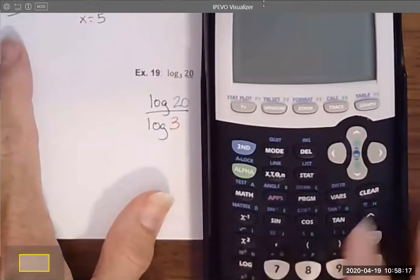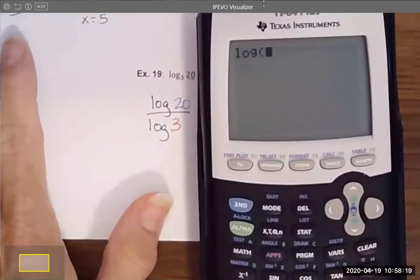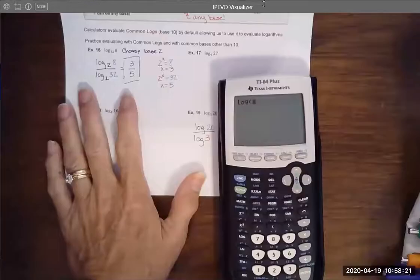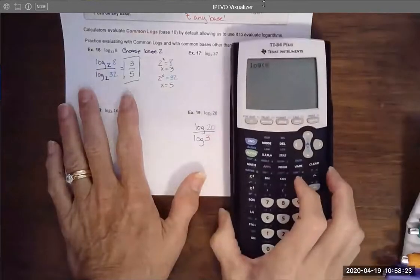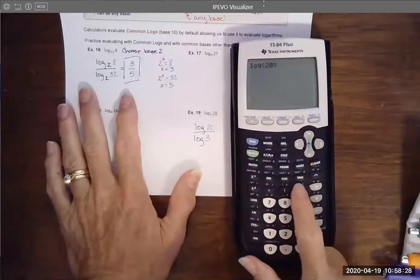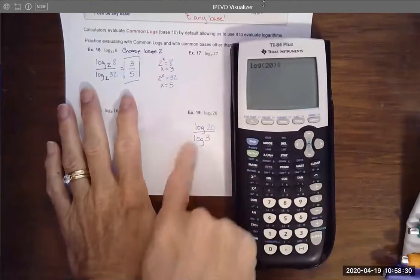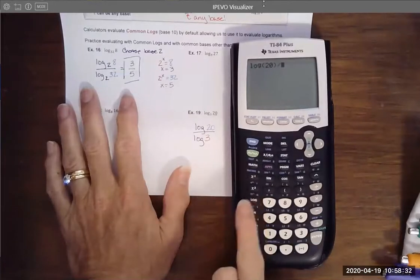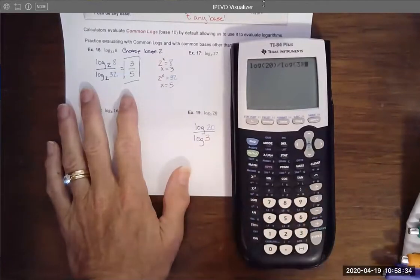I'm going to zoom out just a tad bit. I don't know if that makes it easier or harder. But here I'm going to do log of 20 and then I'm going to divide because we have a division sign by log of three. And when I hit enter,